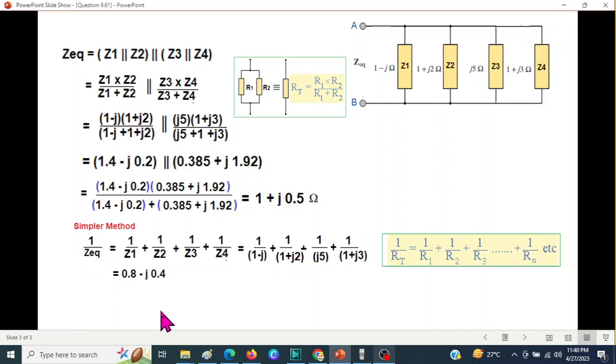That means Z equivalent is 1 over, inverse, 1 over this value. And again you can use the calculator to find the answer.